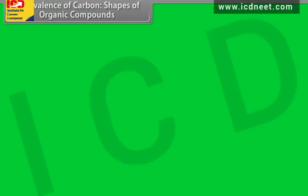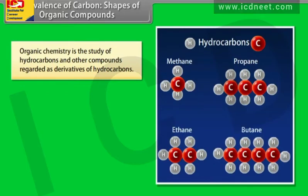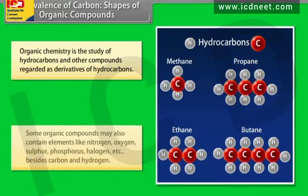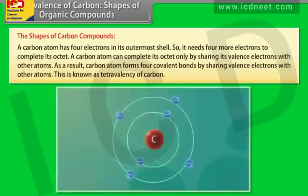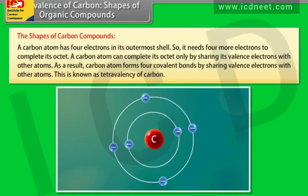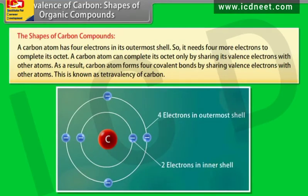Organic chemistry is the study of hydrocarbons and other compounds regarded as derivatives of hydrocarbons. Some organic compounds may also contain elements like nitrogen, oxygen, sulfur, phosphorus, halogen, etc., besides carbon and hydrogen. A carbon atom has 4 electrons in its outermost shell, so it needs 4 more electrons to complete its octet. A carbon atom can complete its octet only by sharing its valence electrons with other atoms. As a result, carbon forms 4 covalent bonds — this is known as the tetravalency of carbon.